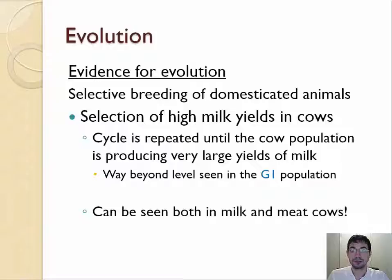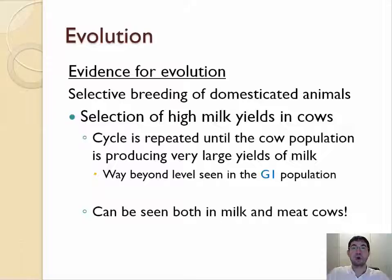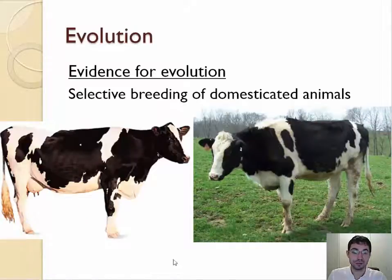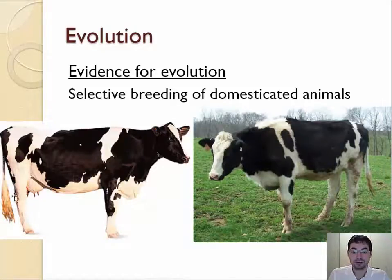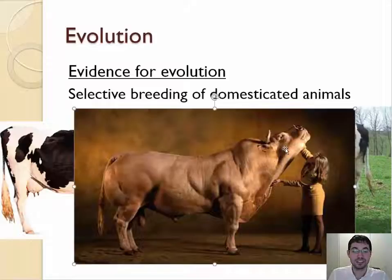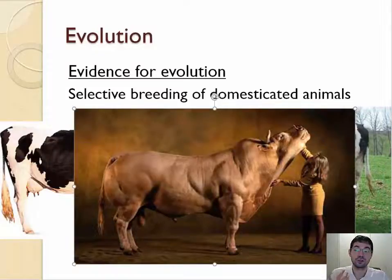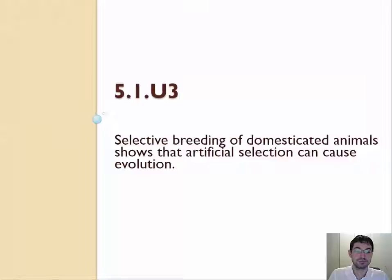Over time, this cycle is repeated until cows today make way more milk than wild cows. Wild cows only make milk for their babies, just like humans — they make milk when they have babies. Modern milk cows make milk all year round, and that's a mutation we have selected for because it was useful for us. We see this domestication both in milk cows and meat cows — meat cows are super buff with a lot of meat, milk cows have huge udders. We've even made something called a Belgian Blue, a super muscular cow. So again, selective breeding of domesticated animals shows that artificial selection can cause evolution.